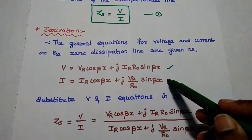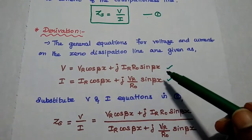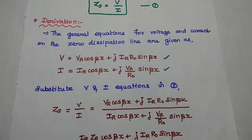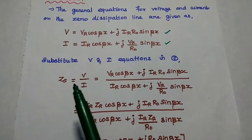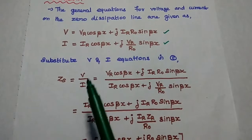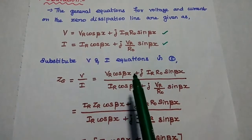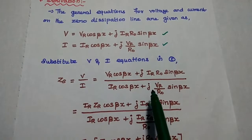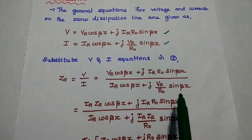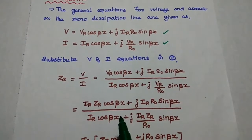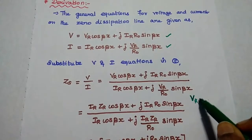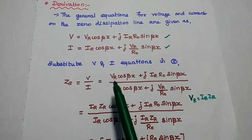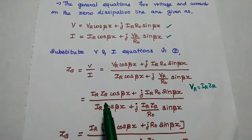We have already derived this. Now we are going to substitute these two equations in the first equation to get the input impedance for the dissipationless line. Here Zs is equal to V by I. We can substitute V as Vr·cos(βx) plus j·Ir·r0·sin(βx), and I as Ir·cos(βx) plus j·Vr by r0·sin(βx). For further simplification, we consider Vr equal to Ir into Zr.